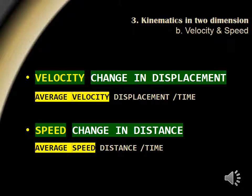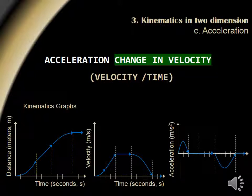Velocity is a vector quantity, which describes displacement traveled per unit time. Speed is a scalar quantity, which describes distance traveled per unit time. Acceleration is defined as the change in velocity per unit time. A negative acceleration is often misunderstood. It's not a change in direction of acceleration, but simply a deceleration in that given direction.